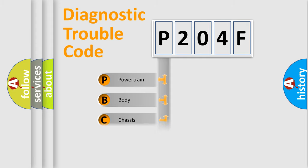Powertrain, Body, Chassis, Network. This distribution is defined in the first character code.